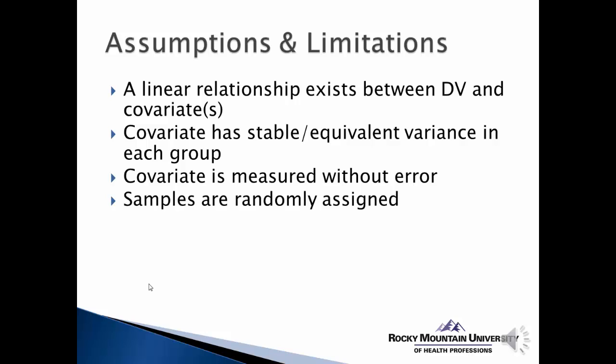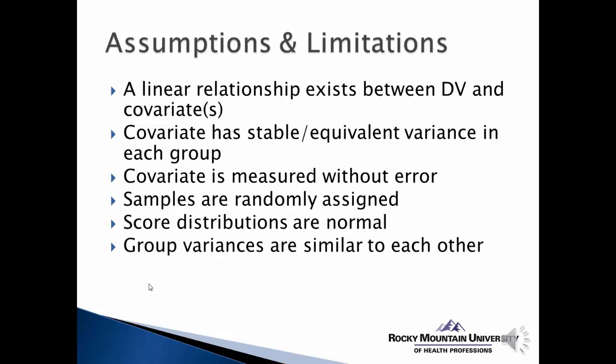The outcome score distributions should be normal or approximate normal — that's something we can look at as part of our normal screening process. And then just like in t-tests and ANOVAs, we want the group variances to be similar to each other. We don't want one group to have a much larger standard deviation compared to another. So again, we want to check that as part of our initial data screening, and that's something we can typically do using Levene's test, similar to what we had done in t-testing and standard ANOVA.